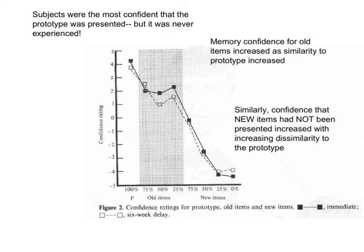There were three main findings. First, memory confidence increased for old items as the similarity to the prototype increased, just as we would expect if subjects were using the prototype in memory to make their memory judgments. Next, confidence that new items were new was highest for 0% distortions, and worst for the 75% distortions, which makes sense because it should be easiest to reject an item and call it new if it is completely dissimilar to the prototype.